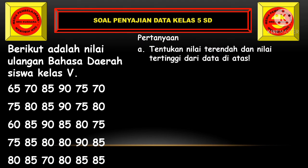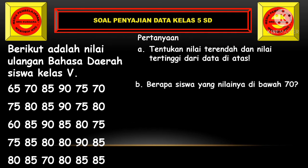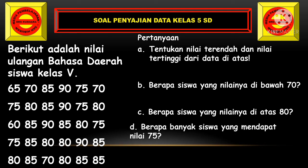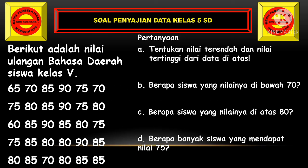Tentukanlah nilai terendah dan nilai tertinggi dari data di atas. Yang B: berapa siswa yang nilainya di bawah 70? Yang C: berapa siswa yang nilainya di atas 80? Dan yang D: berapakah banyaknya siswa yang mendapat nilai 75?